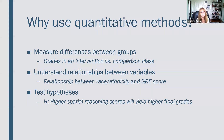Or to understand relationships between variables — is there any relationship between race and ethnicity and GRE scores? This analysis has been ongoing in many graduate programs to think about whether GRE scores should be used as admissions criteria. And then finally, to more formally test hypotheses — for example, you might hypothesize that higher spatial reasoning scores will yield higher final grades in a given course.